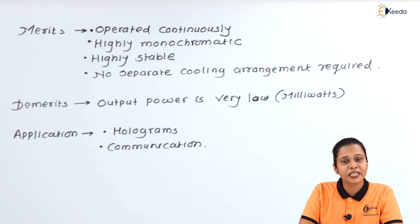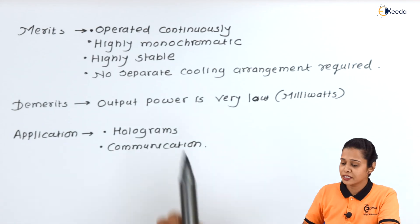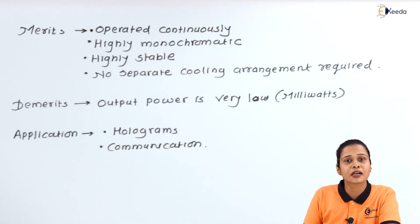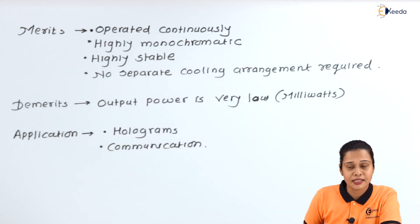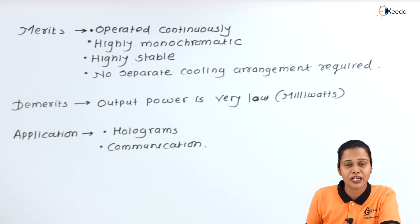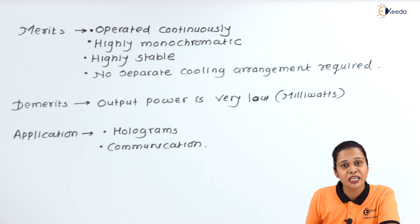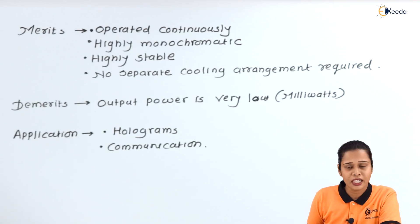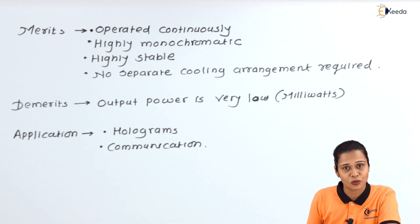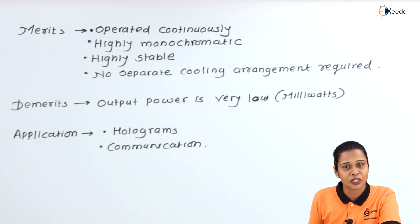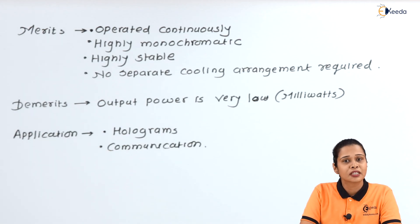Let us see the merits, demerits, and applications of the Helium Neon laser. Merits: it operates continuously, providing a continuous laser beam; the output is highly monochromatic; the laser beam is highly stable; and no separate cooling arrangement is required. The demerit is that the output power is very low — only in the range of milliwatts. Applications include holography, which is a technique that produces a 3D image of a 3D object, and optical communication systems, where the Helium Neon laser plays an important role.